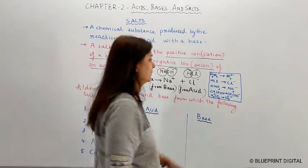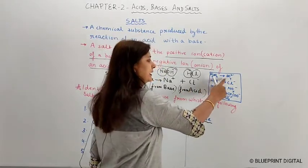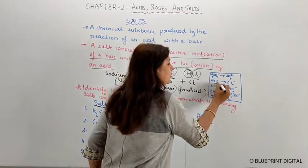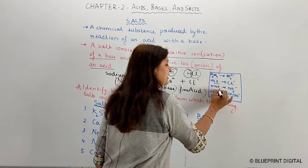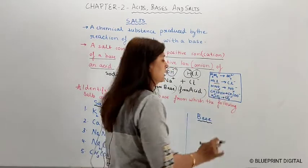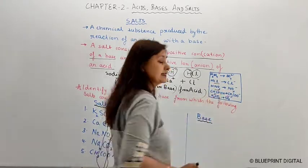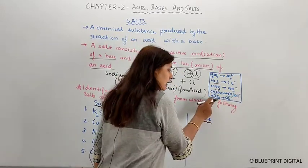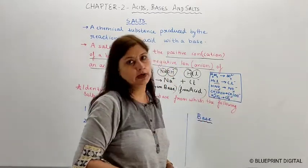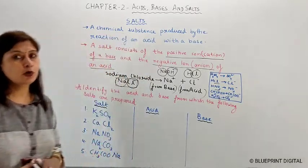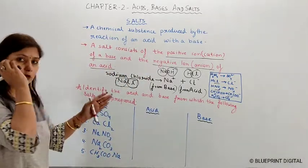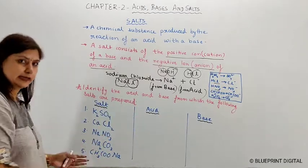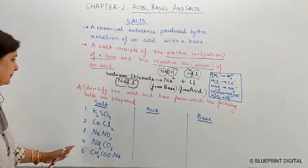Now I will tell you a very simple way to identify the anion. If the acid is sulfuric acid, the anion is sulfate (SO₄²⁻). If it is hydrochloric acid, the anion is chloride. If it is nitric acid, the anion is nitrate. If it is acetic acid, the anion is acetate. For carbonic acid, the anion is carbonate. These are the common anions from common acids.